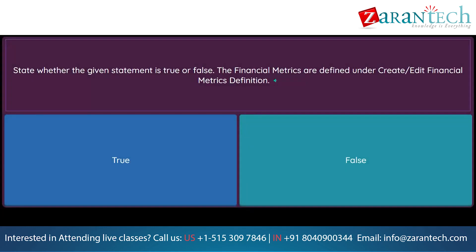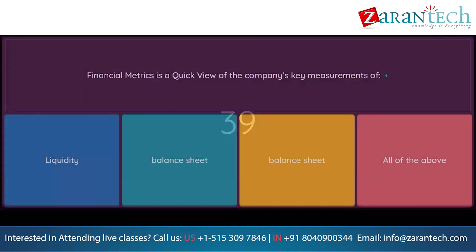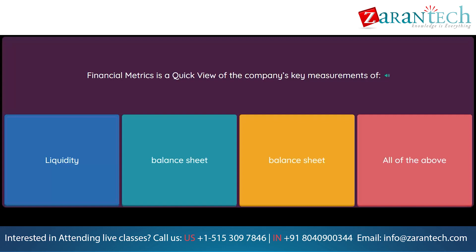Question: State whether the given statement is true or false. The financial metrics are defined under create/edit financial metrics definition. Option 1: true. Option 2: false. Question: Financial metrics is a quick view of the company's key measurements of. Option 1: liquidity. Option 2: balance sheet. Option 3: balance sheet. Option 4: all of the above.